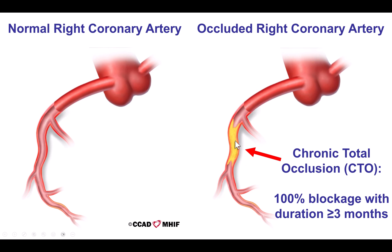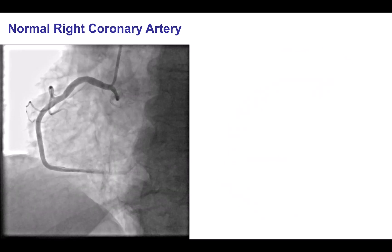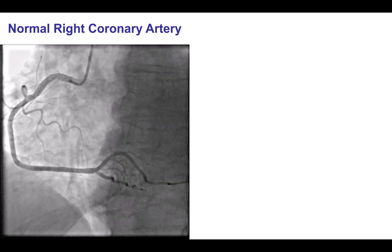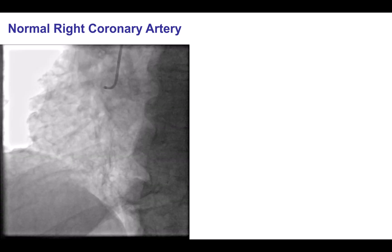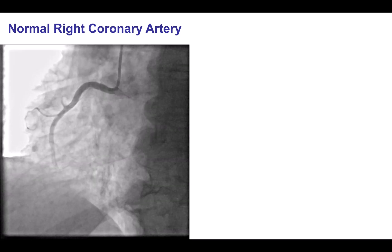However, sometimes blockages develop inside those arteries, and those blockages can become 100%. A 100% blockage that has been there for three months or more is what's called a chronic total occlusion. A sudden blockage that's 100% is actually what can lead to a heart attack.